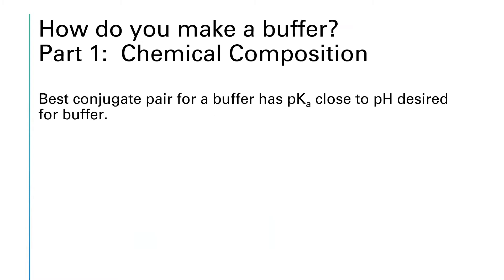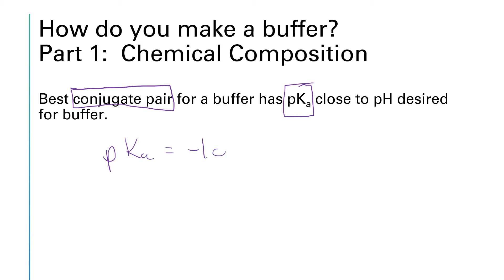Let's say your job is to go into the lab and make a buffer with a particular pH. There are three parts to this process. First, you've got to figure out what chemicals you're going to use to make that buffer, because you need a conjugate pair. The best conjugate pair for a buffer at a particular pH is one that has a pKa close to your desired pH. Remember, p just means you take the minus log, so pKa means you take minus the log of the Ka value. If you want a buffer with a certain pH, you're looking for conjugate acids that have a pKa close to that pH value — that helps you choose what chemicals to use.